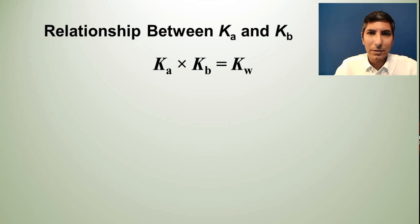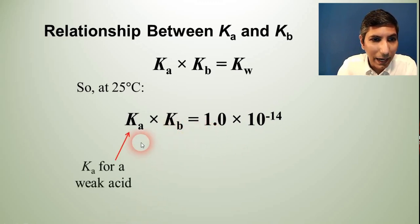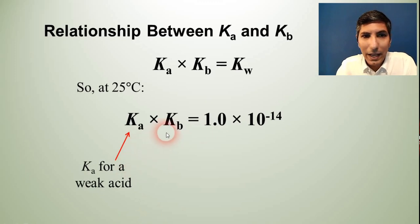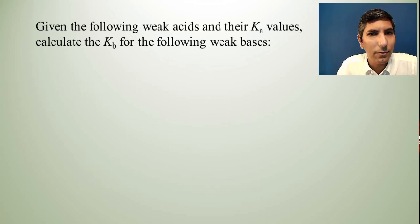Now since most of our problems that we're going to solve in this course are at 25 degrees Celsius, we know that Kw = 1 × 10^-14 at that temperature. So if you know Ka, you can solve for Kb just by dividing into 1 × 10^-14. Ka is of course the Ka for a weak acid and Kb is going to be the Kb for its conjugate base. So if you know the Ka, you can figure out the Kb and vice versa. If you know the Kb, you can solve for the Ka. So we're going to do a few problems, at least one problem with this, but let's just do a couple of comparisons here.